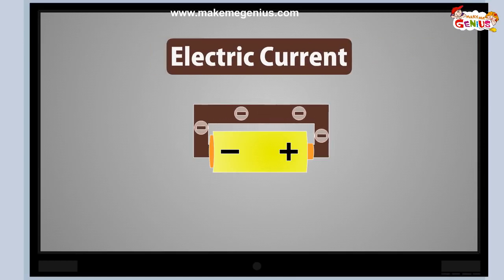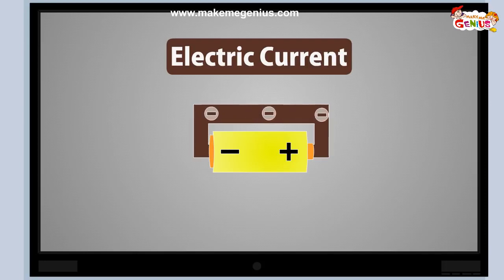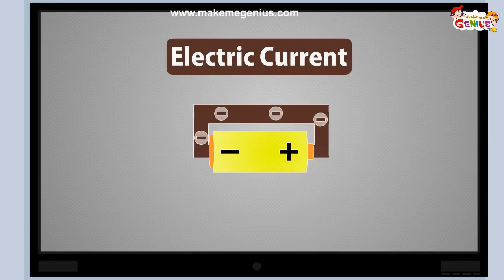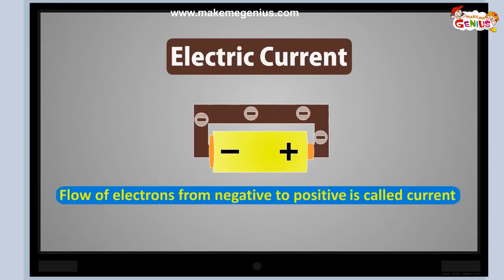It's like the way a current of water flows in a river. It is like a constant flow of electrons through something. When a wire is connected to each end of the battery, electrons begin to flow from negative to positive — from minus to plus. And this flow of electrons is called current.